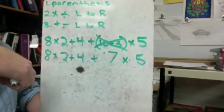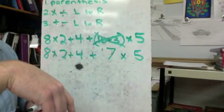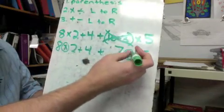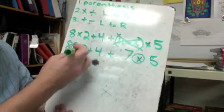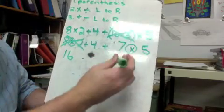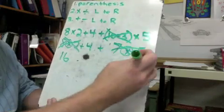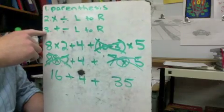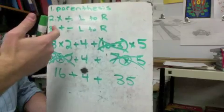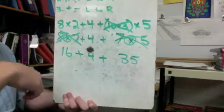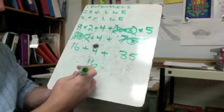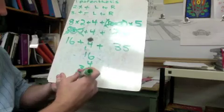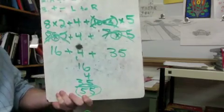Multiplying from left to right, I pick out the symbols I need. I've got a multiply here and a multiply here. Eight times two is sixteen — get rid of it. Seven times five is thirty-five — get rid of it. Bring everything else down: plus four and another plus sign. Now we move to step three — add and subtract from left to right. We only have addition, so we just add straight across: sixteen plus four plus thirty-five equals fifty-five. That's the final answer.